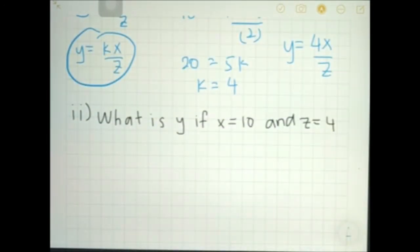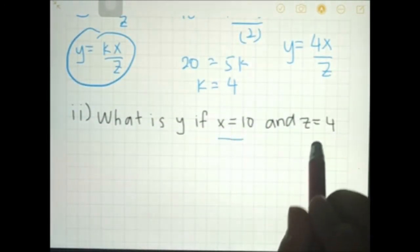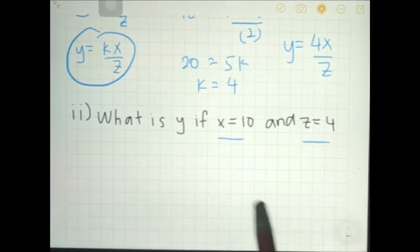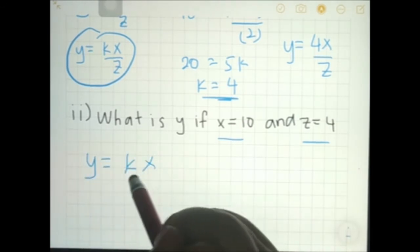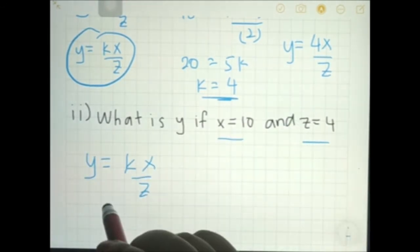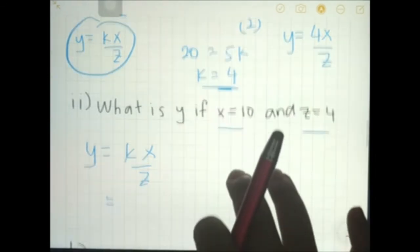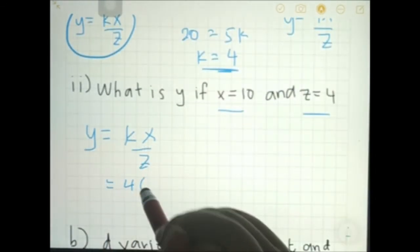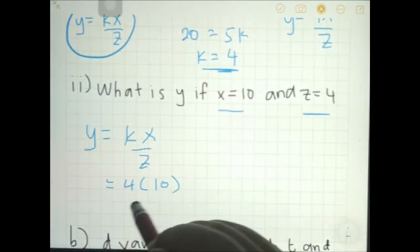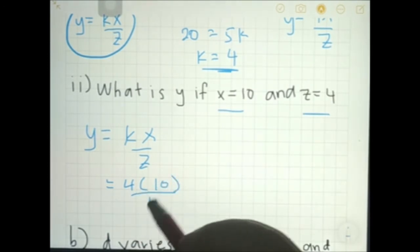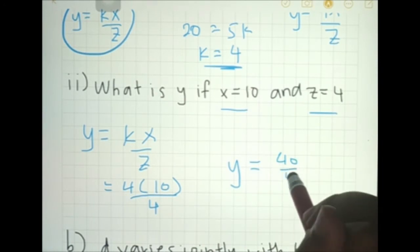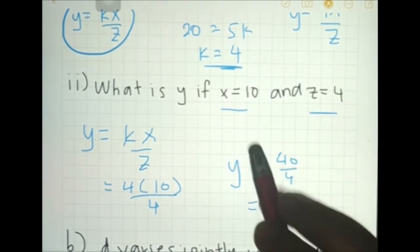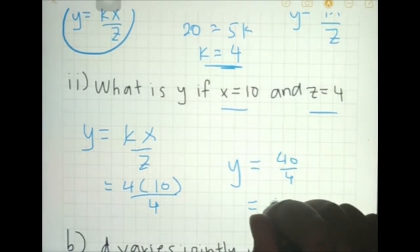Another question: what is y if x equals 10 and z equals 4? Since we already found k equals 4, we substitute into y equals kx over z. So y equals 4 times 10 over 4, which gives 40 over 4. Therefore y equals 10.